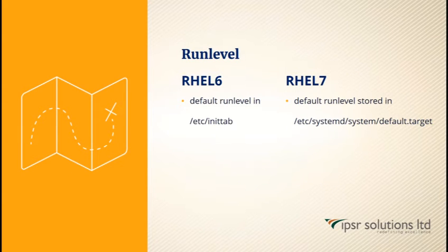Next is the run level. The default run level was defined in /etc/inittab for RHEL6, whereas in RHEL7 it is a pointer to /etc/systemd/system/default.target.